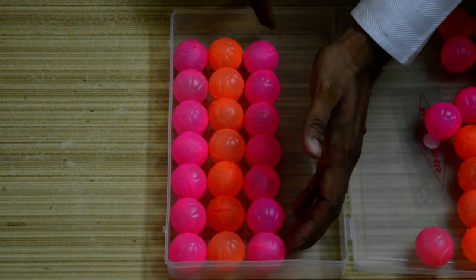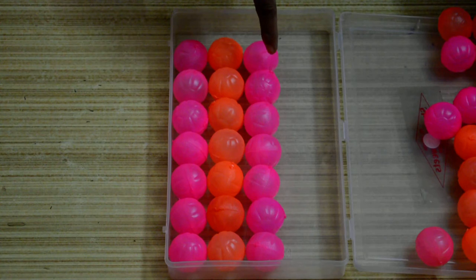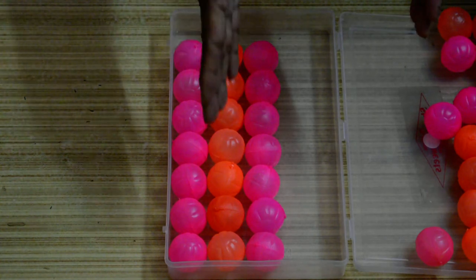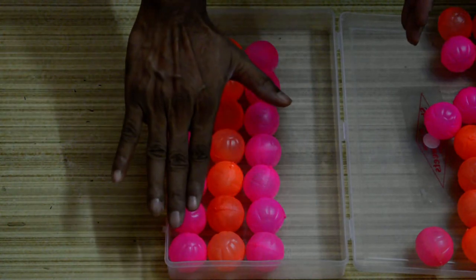Now if you see, this row, the orange row is directly above the pink row and the pink row is again directly above the orange row. So that way they are identically placed. That means each row is placed just like the other row.